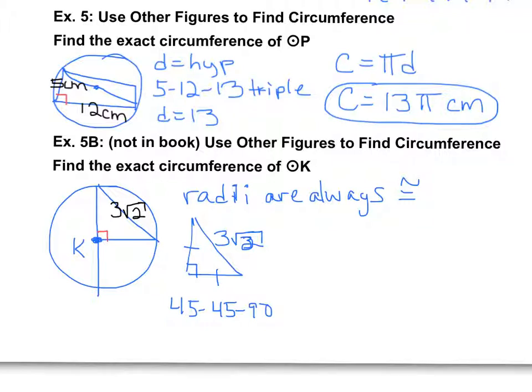In that case, the hypotenuse is going to equal the leg times radical 2. I hope you can see that the leg there has to automatically be 3.